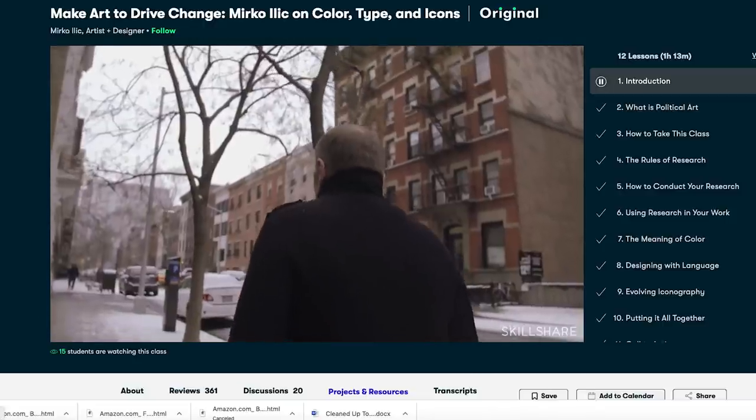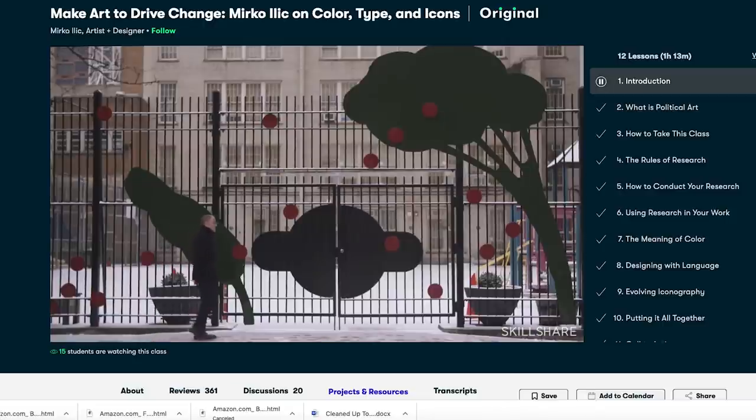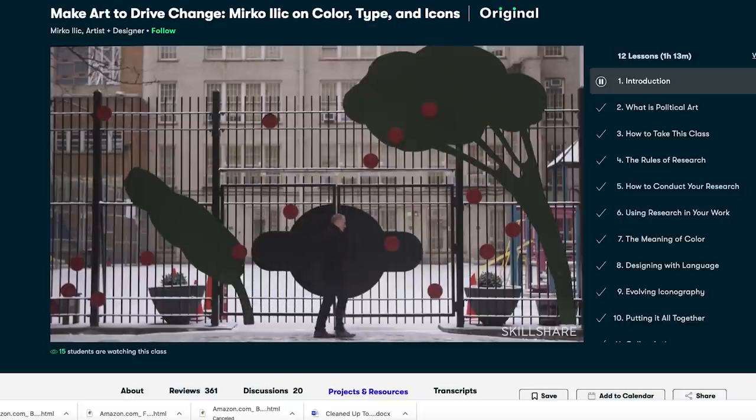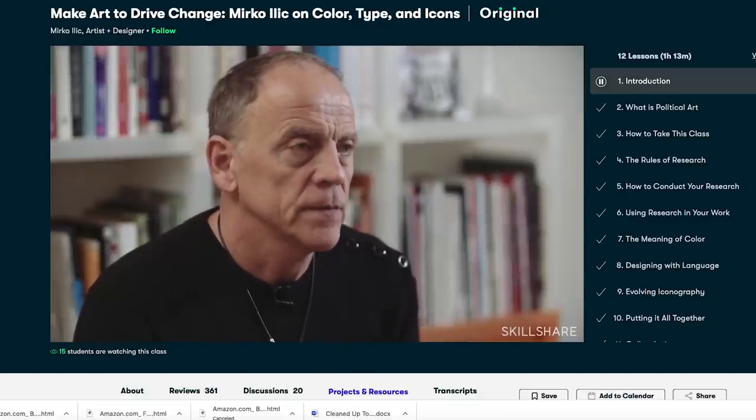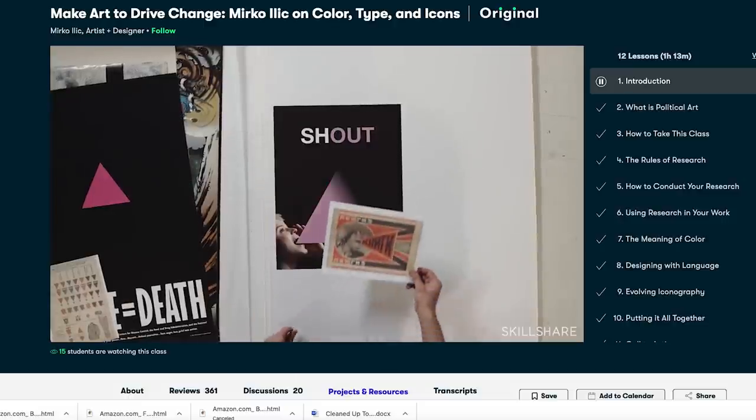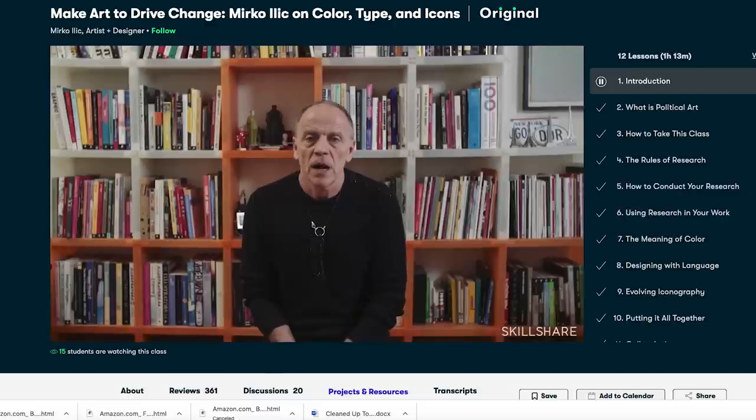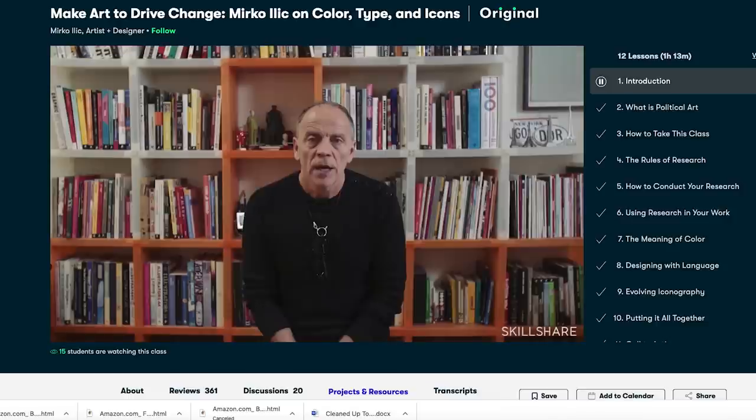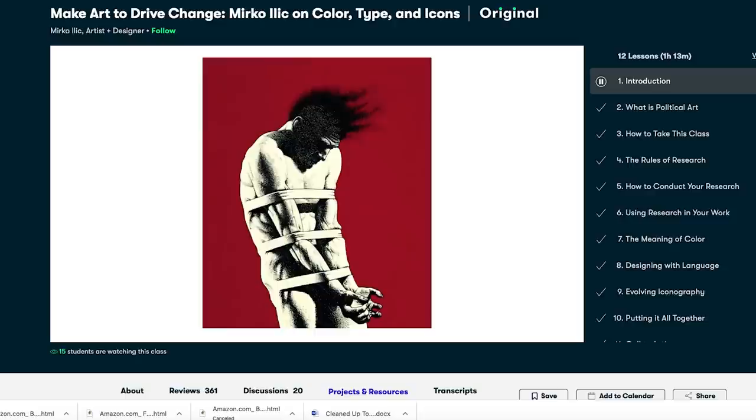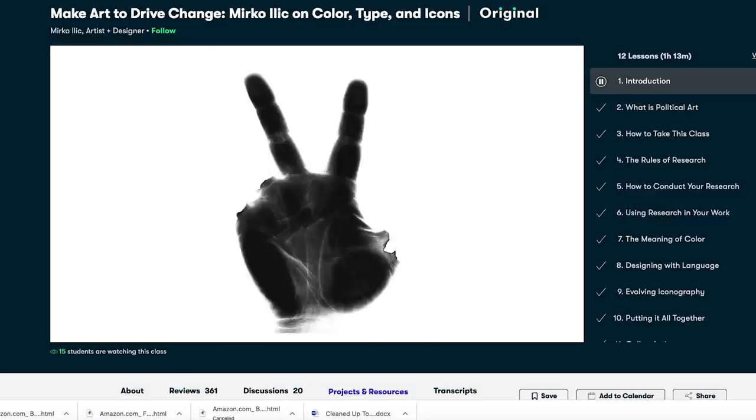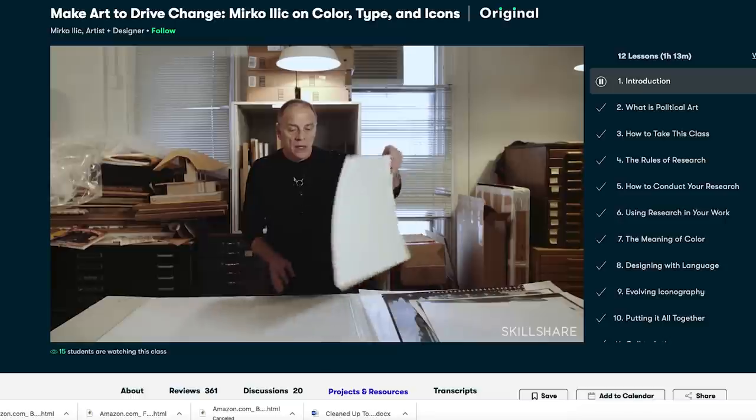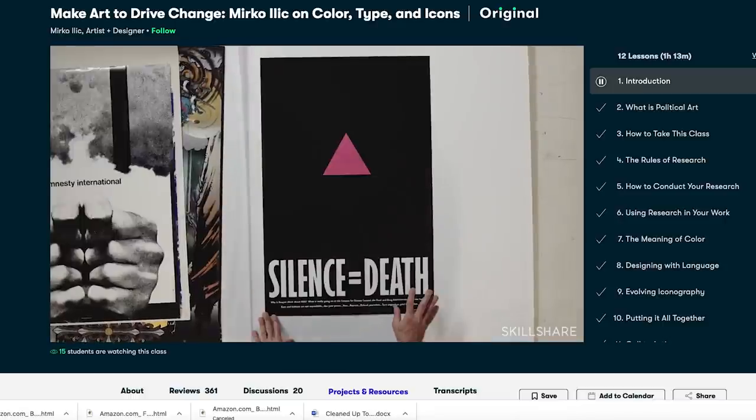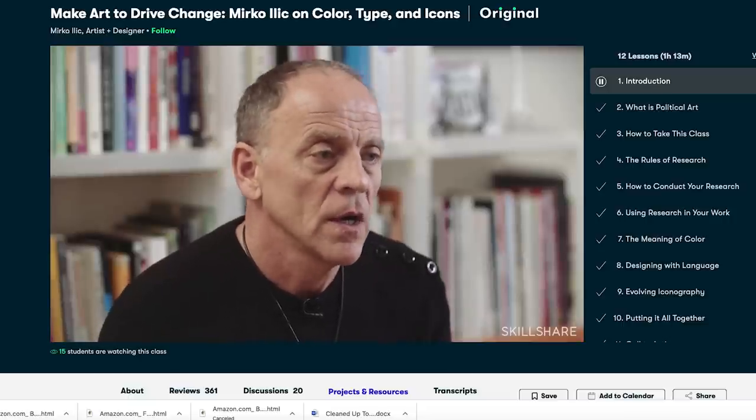Another Skillshare class for creating social change that I'm very excited about is a class by a legendary designer and professor at a school which I happen to be an alumna, the School of Visual Arts. It's called Make Art to Drive Change by Merkel Elish on color, type, and icons. In his class he teaches you how to conduct a critical research needed to make truly original art, how to use design tools like color, text, and icons for the greatest impact, and how to approach your work with a higher purpose. After taking this class you'll be invigorated to take action for causes you care about, to use your skills for good, and to approach every project you take on in an entirely new way.